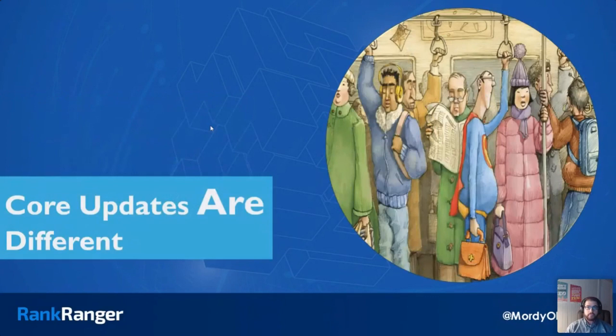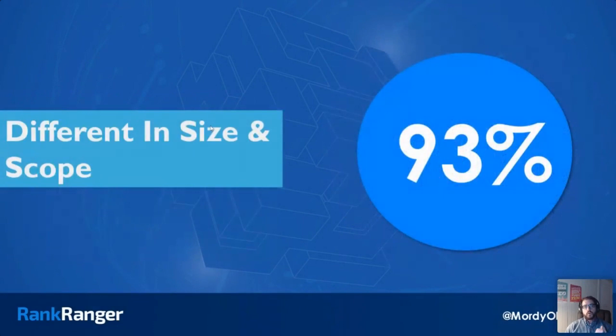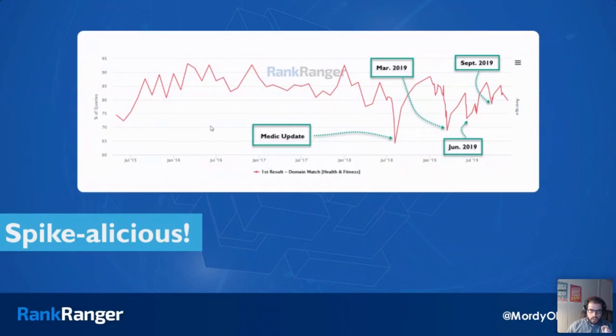Let's go into how the core updates are different because they are very different from your average unconfirmed update. Google rolls out unconfirmed updates once, twice, three times a month — much smaller events. On average, the core updates are 93% more volatile across the top 10 results on the SERP.